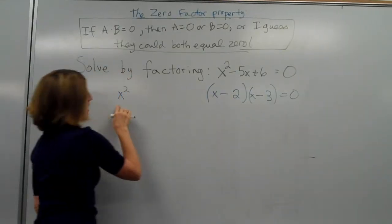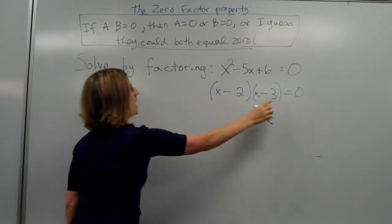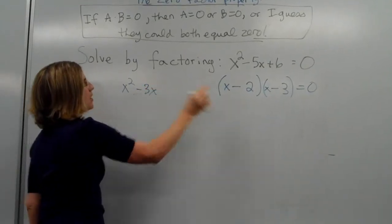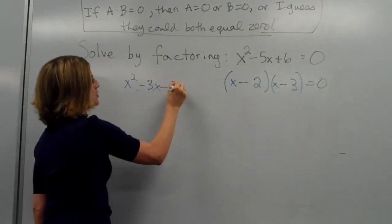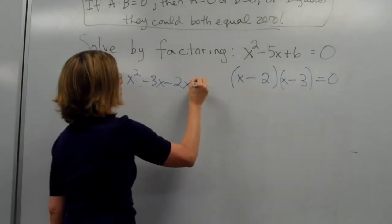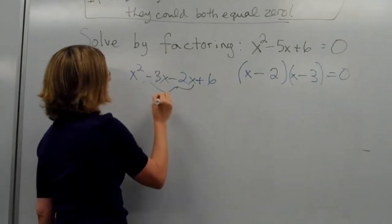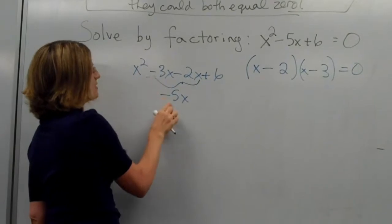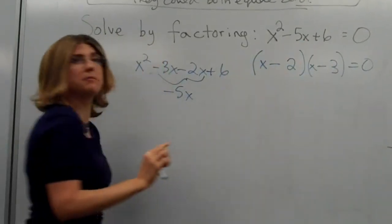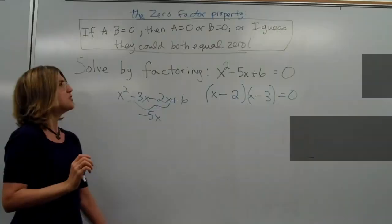x times x is x squared. Then x times minus three is minus three x. Minus two times x is minus two x. And minus two times minus three is plus six. You can see that this adds up to minus five x. And can you see that that's the same polynomial or quadratic equation that we started with?